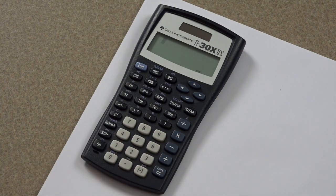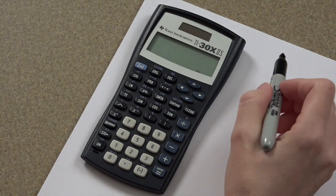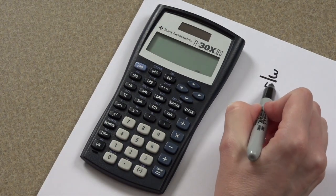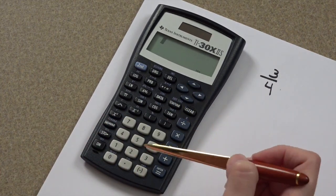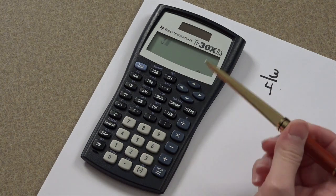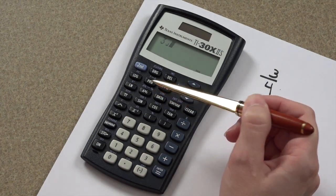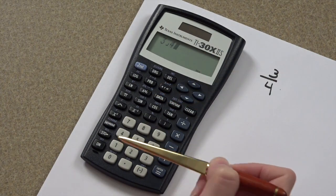So for example, you want to enter the fraction 3 fourths. You'll press the 3 key, then you'll press the fraction key, and then you'll press the 4 button.